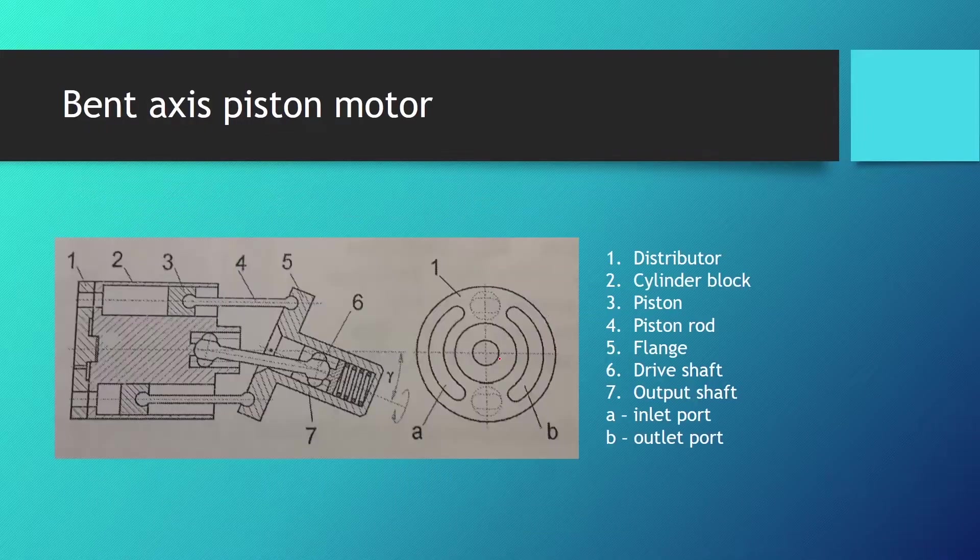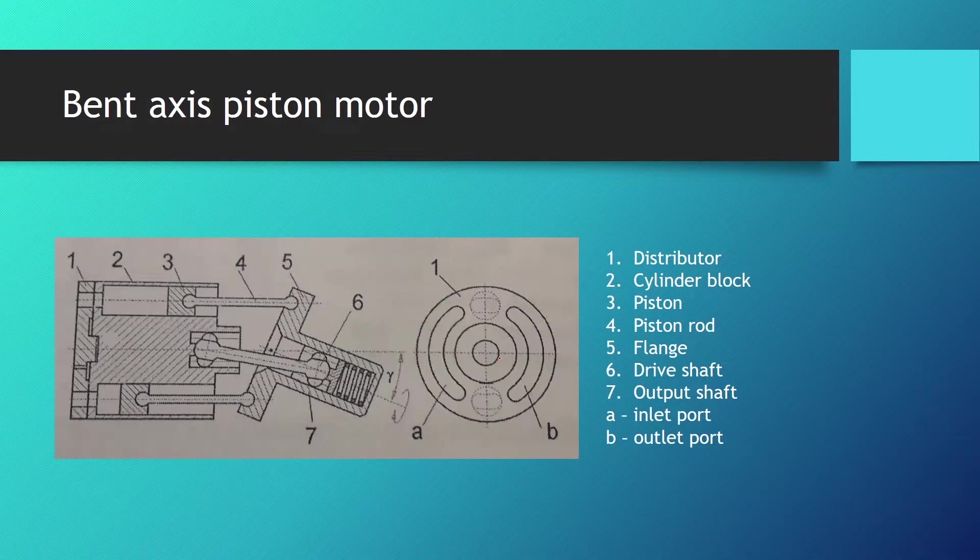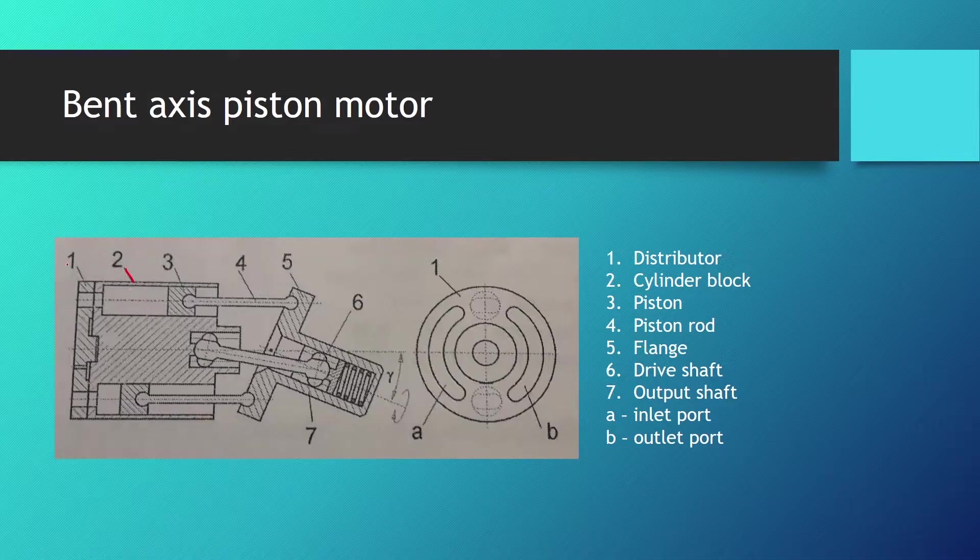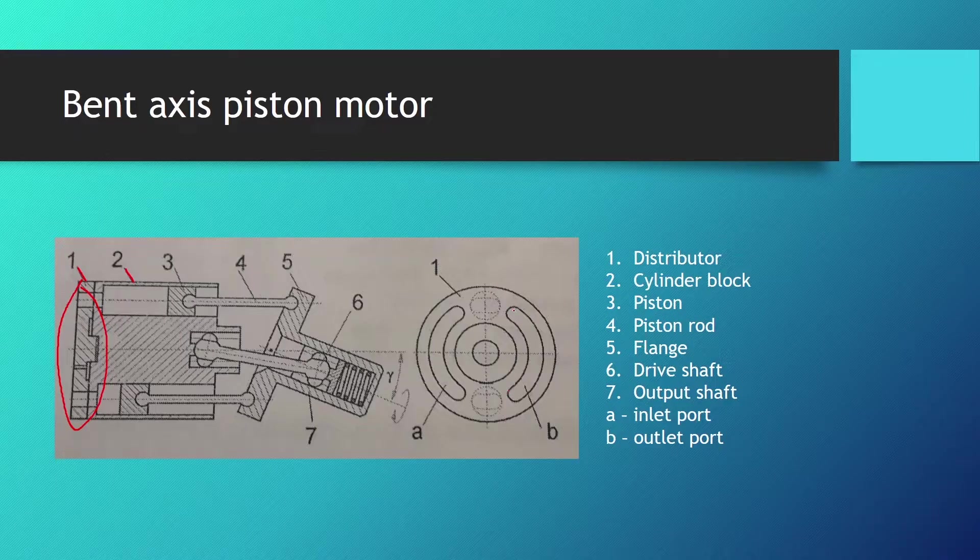Here we can see a cutaway diagram of a bent axial piston motor and its parts. You can see the cylinder block here on number two and the distributor on number one. We can see how the distributor looks from the frontal view. On the distributor we have the inlet port and the outlet port. On number three you can see the piston, on number four the piston rod which connects the piston and the flange on number five.